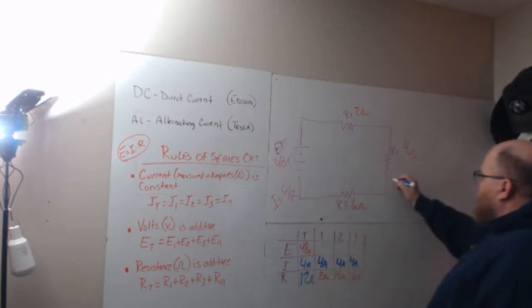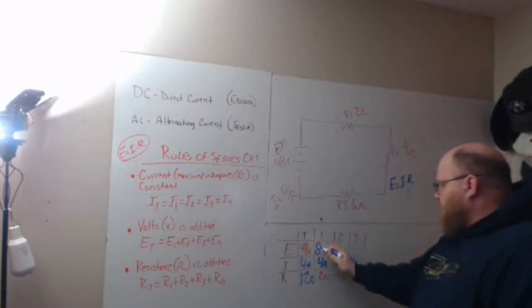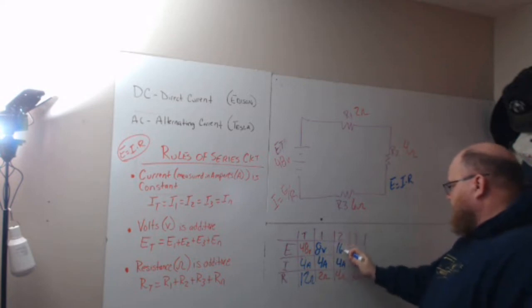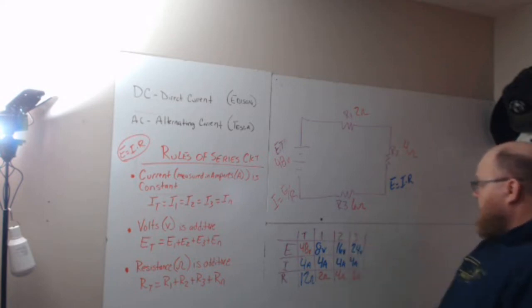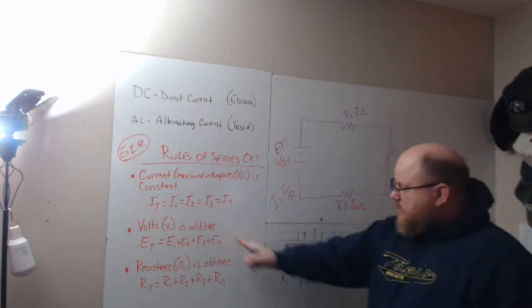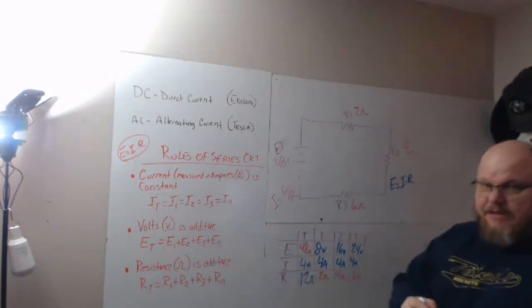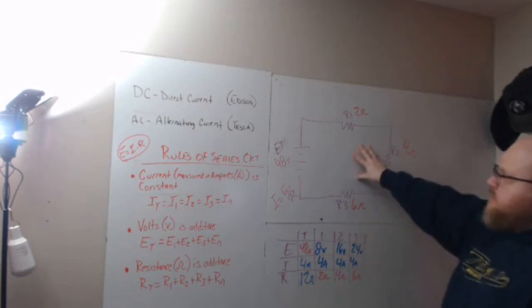I have it. Now I use Ohm's Law, E equals I times R at each location. So I get 8 volts, 16 volts, 24 volts. Now when I add those together, 24 plus 16 is 40, plus 8 is 48. So you see all of them work out. This is a very simple one to do that I laid out.